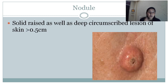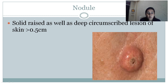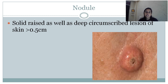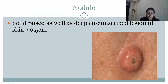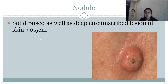Next is nodule. These are solid, raised, and deep circumscribed lesions of the skin of more than 0.5 cm. What is the difference between a papule and a nodule? Both are solid raised lesions, but the nodule has a deeper component — there is depth also. And the second difference is the size is more than 0.5 cm. These are the two differences between a nodule and a papule.